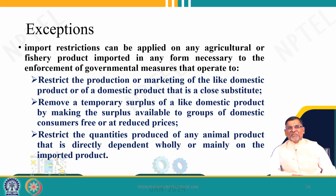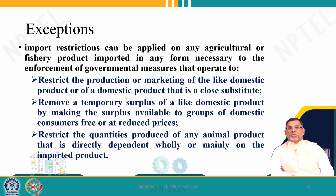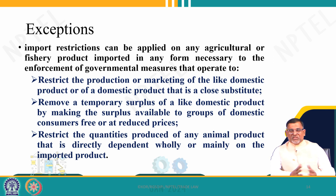Other exceptions beyond Article 11 include import restrictions to restrict the production or marketing of a like domestic product or a close substitute. Temporary surpluses can also be removed, and restrictions may apply on quantities produced of any animal product that is directly dependent wholly or mainly on the imported product. These provisions give certain exceptions to the strict implementation of Article 11.